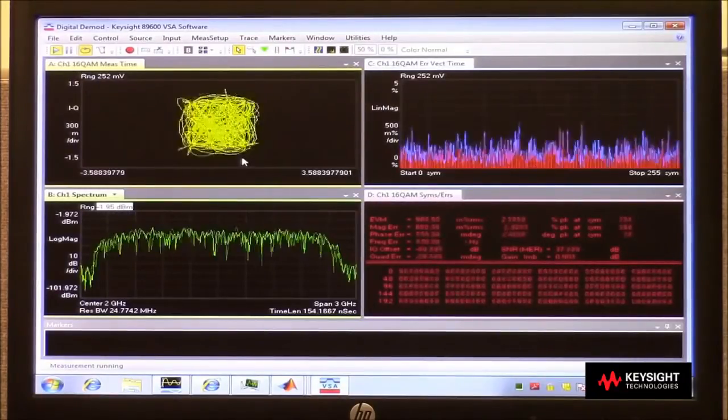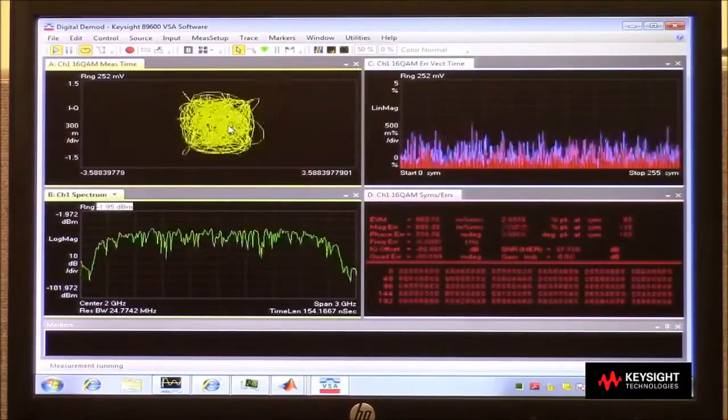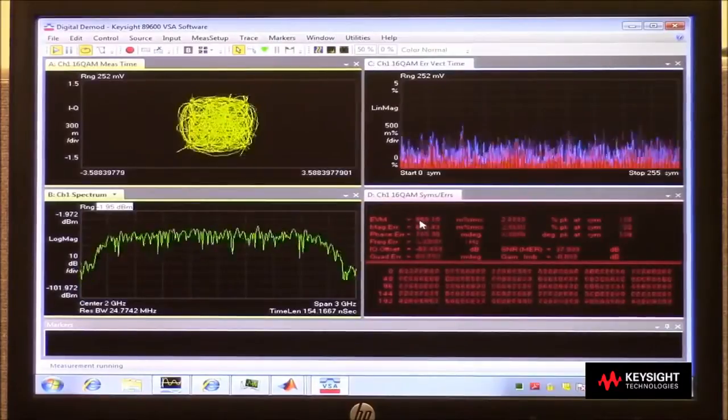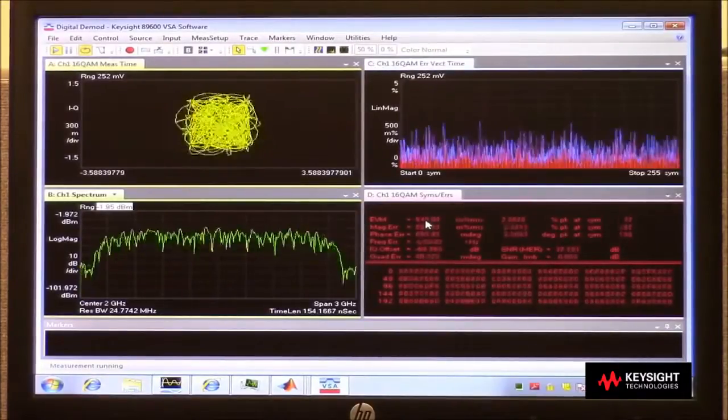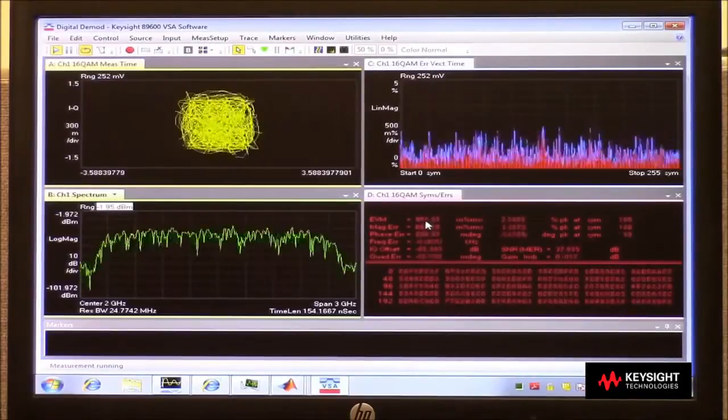What kind of results are we getting? Well, I see a very fine constellation diagram, and an error vector magnitude of just under 1%, about 0.96, 0.97%. That's an excellent result.